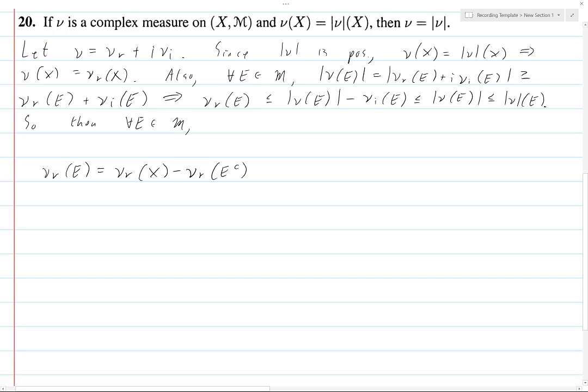Because e is the same as x set minus e complement. But what is this greater than or equal to? Well, we know that ν_r of x is equal to total variation of ν of x. And so, that's an equals.